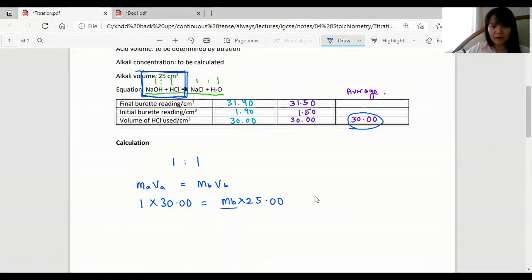Now we can calculate our M base. So the concentration of the base is 1.2 mole per dm cubed, which makes sense that it's more concentrated than the acid because we used less of it.